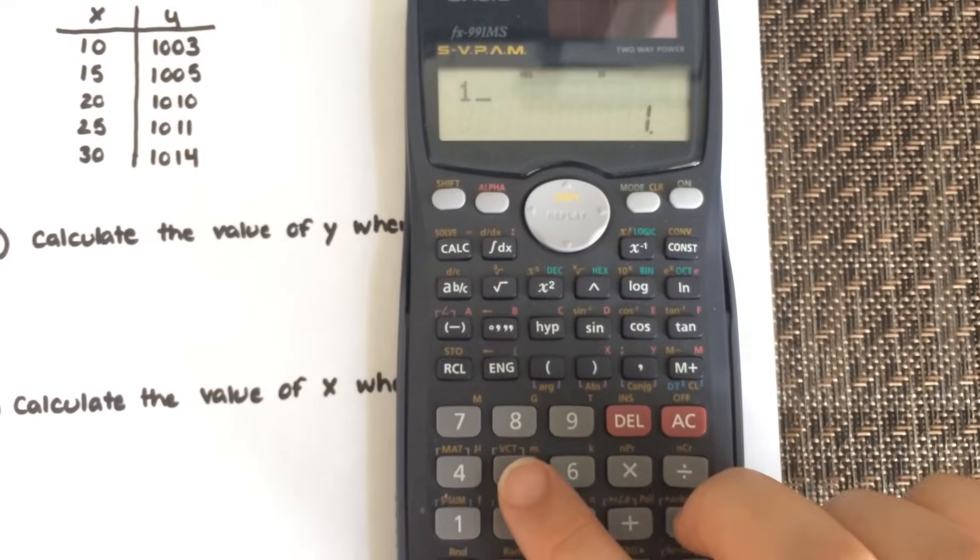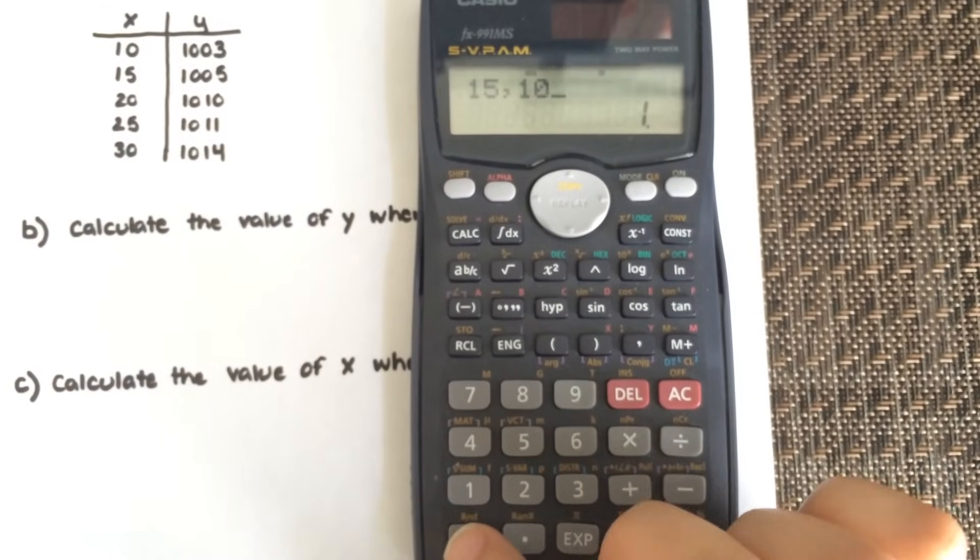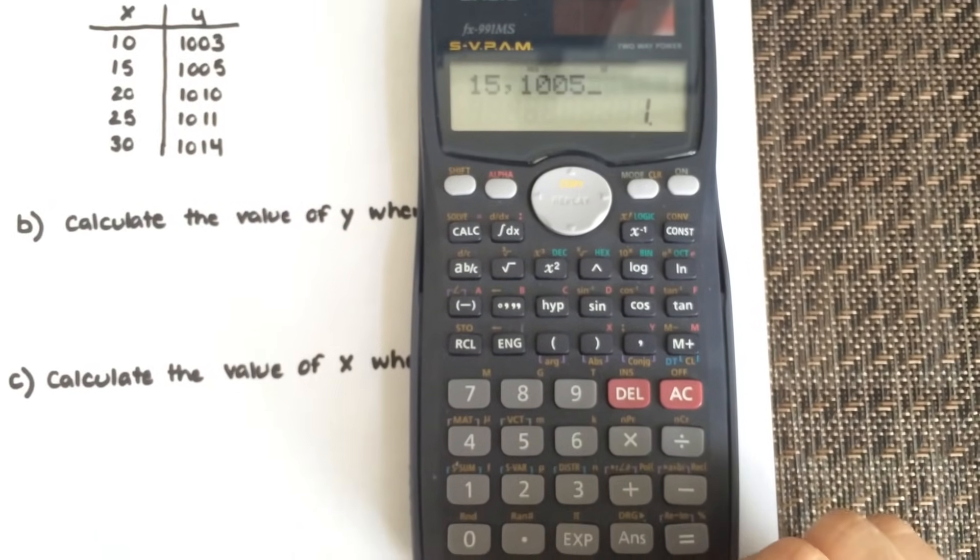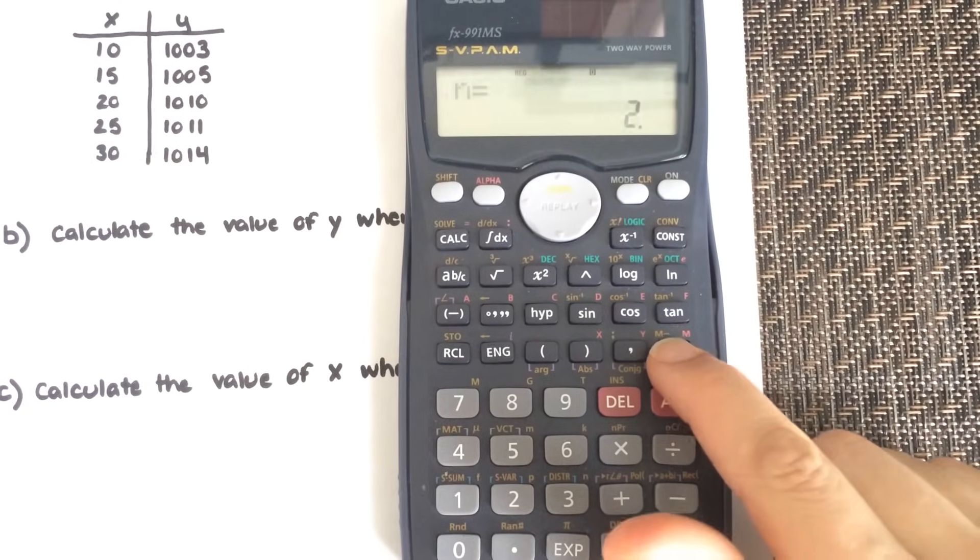So the next one, 15, comma, 1005. And then again, dt, so the m plus.